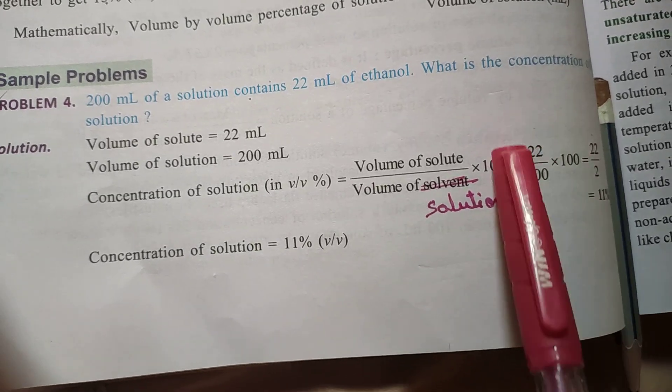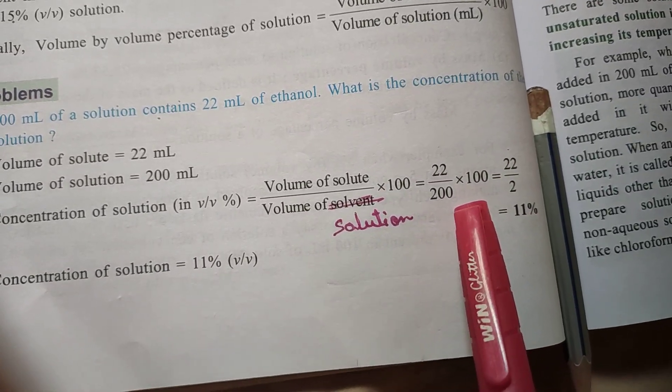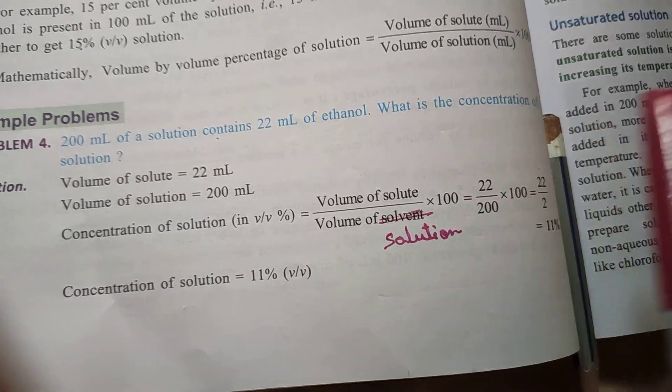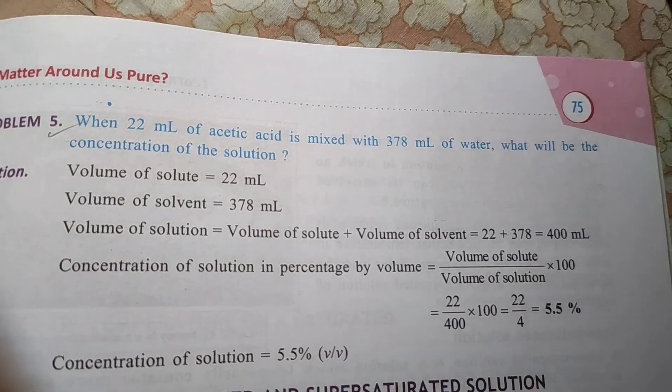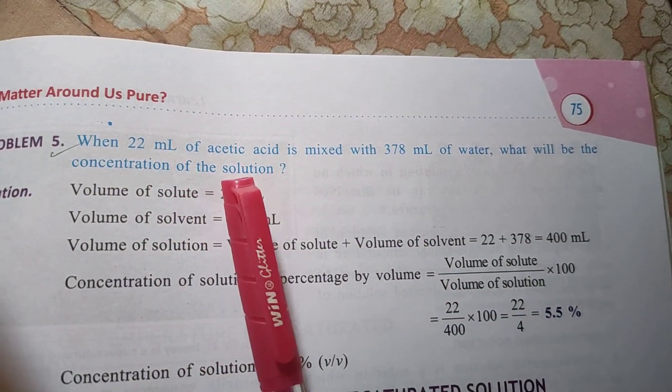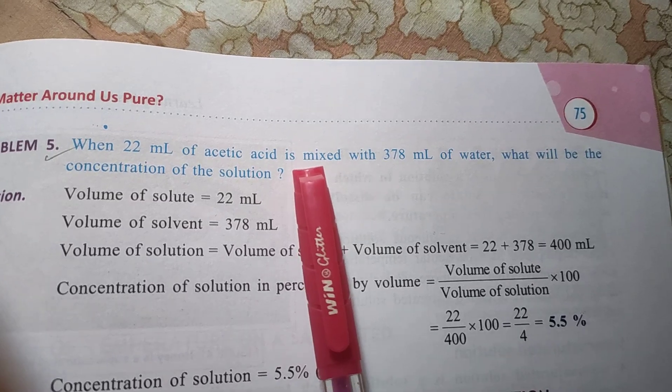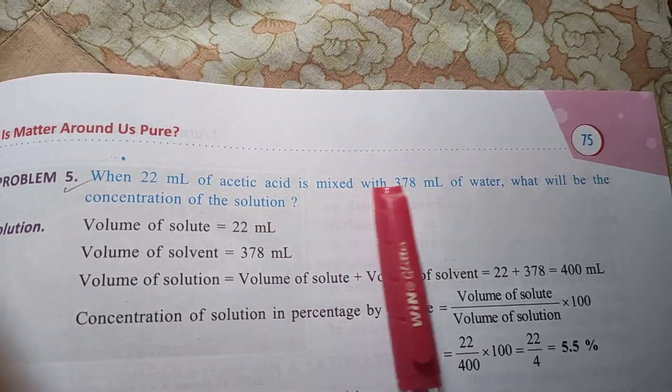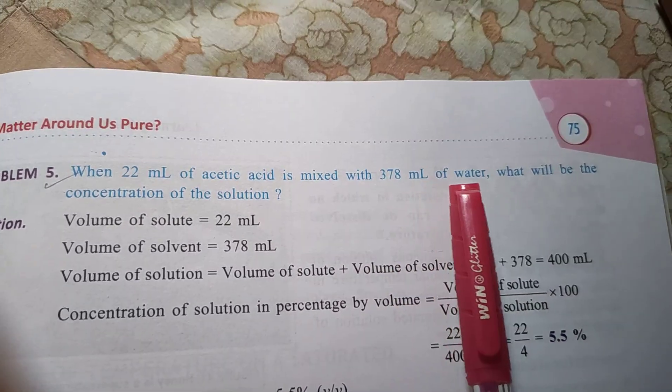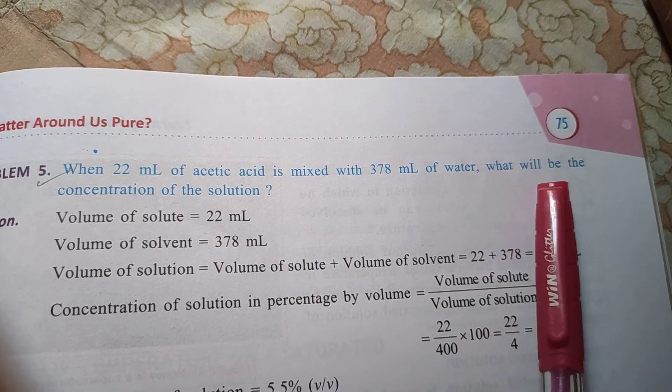Next question. The next question is: when 22 ml of acetic acid (C2H5OH) is mixed with 378 ml of water, then what will be the concentration of solution?